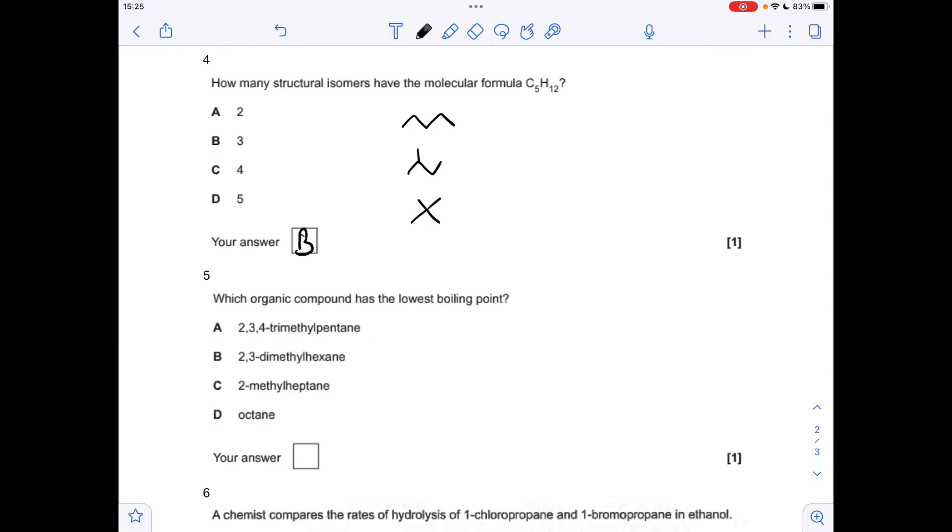Moving on to number 5. So the thing we've got to appreciate is the molecular formula for these things is all C8H18s. We can't base it on the number of electrons in the molecules. These are all structural isomers essentially. So what's it going to be down to? It's down to the degree of branching. So the one with the most branching is going to have the lowest boiling point. It's got the weakest induced dipole forces between its molecules. So A with those three numbers there has got the most branching. So that's your answer.